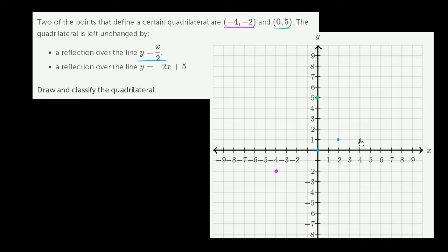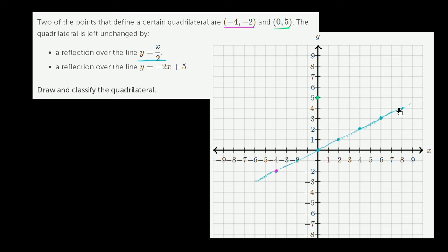y is always 1 half of x. When x is 4, y is 2. When x is 6, y is 3. When x is 8, y is 4. When x is negative 2, y is negative 1. When x is negative 4, y is negative 2. So it actually goes through that point right there, and it just keeps going with a slope of 1 half. This is the line y is equal to x over 2.